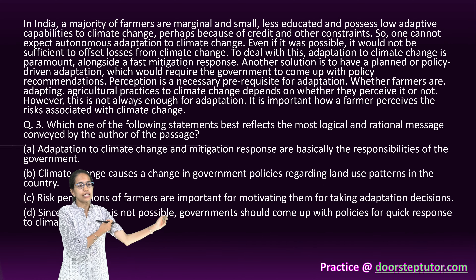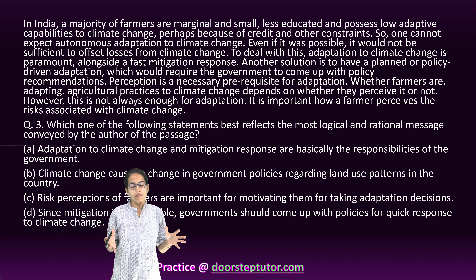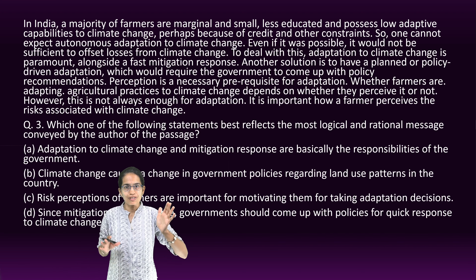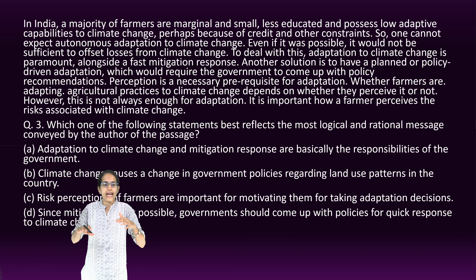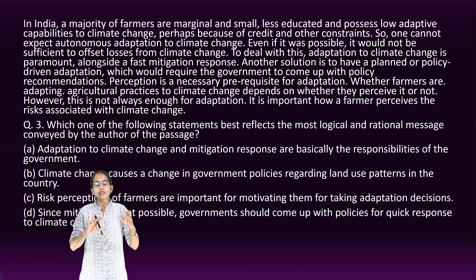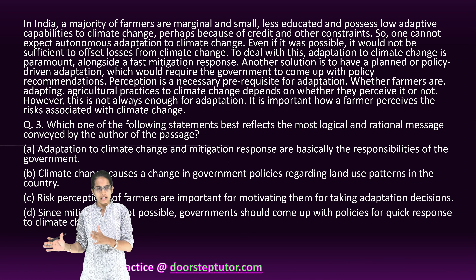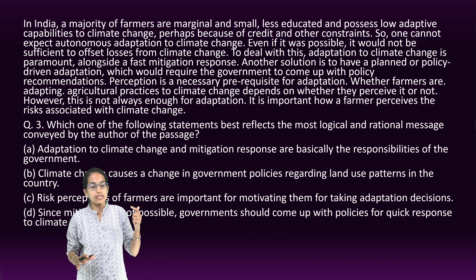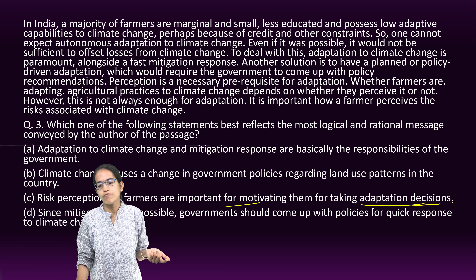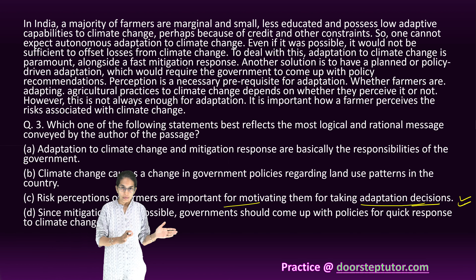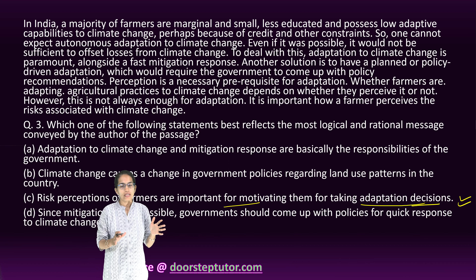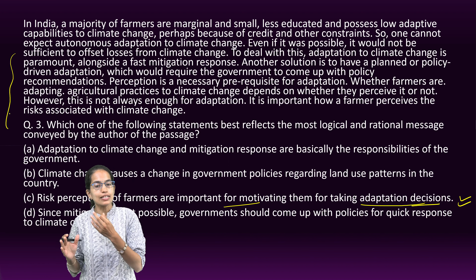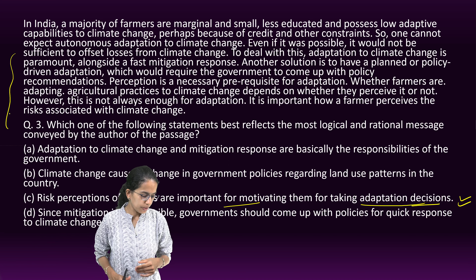The next question is again a passage-based question. It says that in India, agriculture is being affected by climate change. However, if farmers are being taught about the issues of climate change, they are not going to understand and accept it easily. So what has to be done? The perception for adoption or adaptation to a new aspect has to be taken into account. The most important thing is that the risk perceptions of the farmers are important to motivate them for adaptation decisions. It is very important to motivate them, and unless the government plays an important policy-making role, this won't be possible.